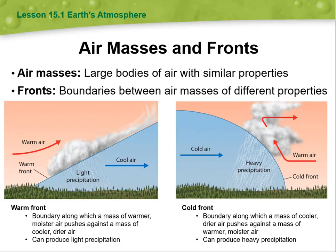Then we have air masses and air fronts. Air masses are large bodies of air with similar properties. Fronts are boundaries between air masses of different properties — for example, cool air meeting warm air. A warm front is the boundary along which a mass of warmer, moist air pushes against a mass of cooler, drier air, and that can produce light precipitation.